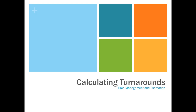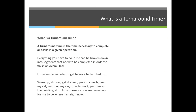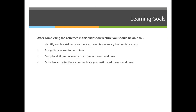Our next lecture is on calculating turnaround times for time management and estimation purposes. Our objectives are to identify and break down a sequence of events necessary to complete a task, assign time values for each task, compile a list of all times necessary to estimate turnaround time, and organize and effectively communicate your estimated turnaround time by setting a start date and an end date.